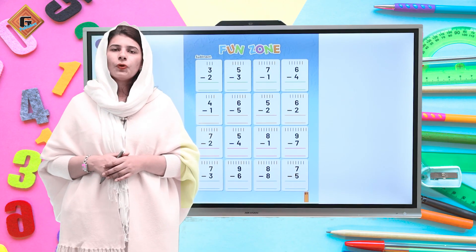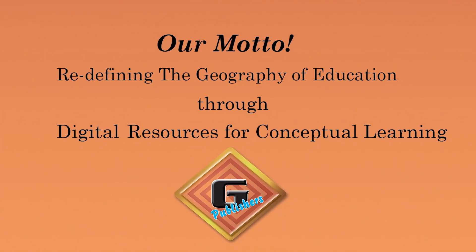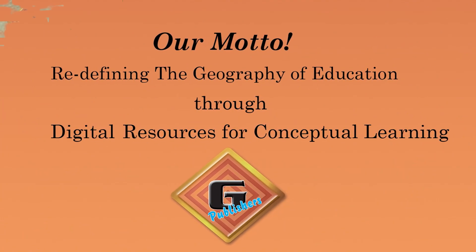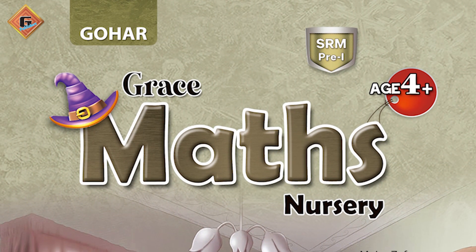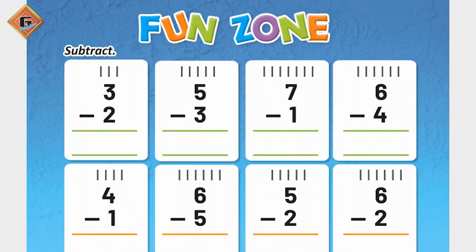Assalamu alaikum, my name is Fiza Abdul Manan. Hope you all are good. Welcome to Gohar Publisher. Our motto is redefining the geography of education through digital resources for conceptual learning, and our book name is Gohar Grace Math Nursery, age 4 plus. Yes, we are going to start our page number 81. On page 81, we will do subtraction in the Fun Zone, subtraction with lines.